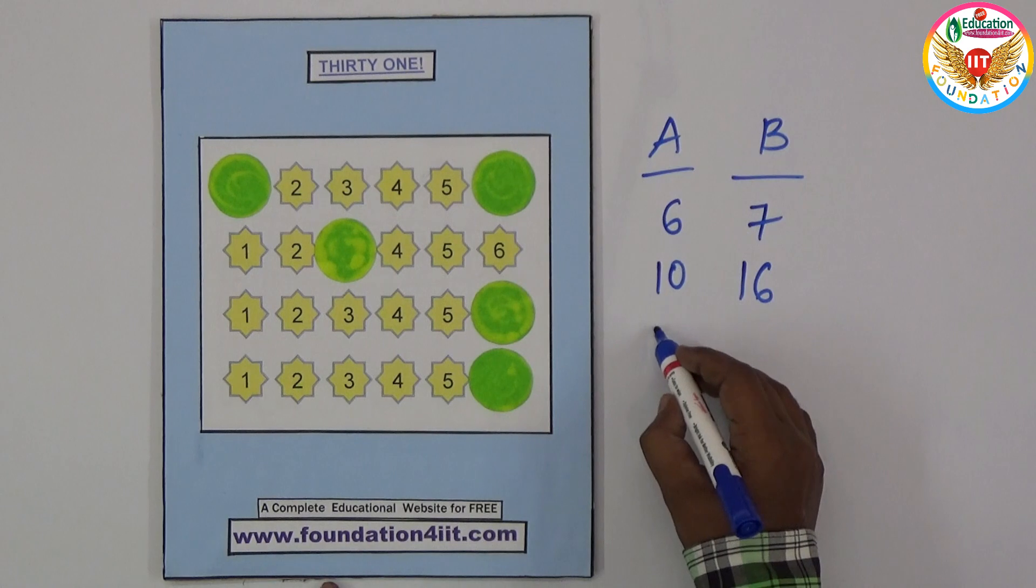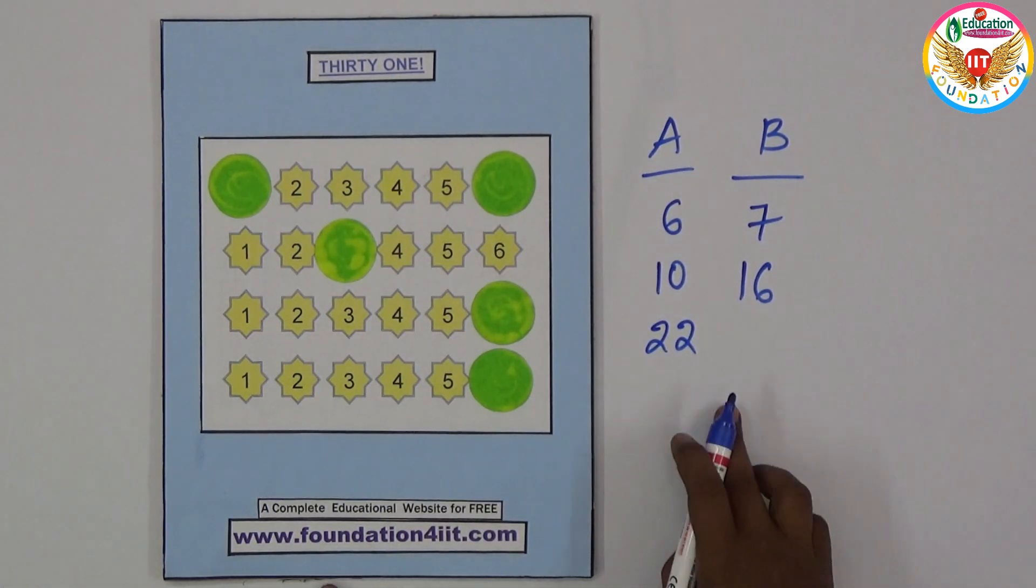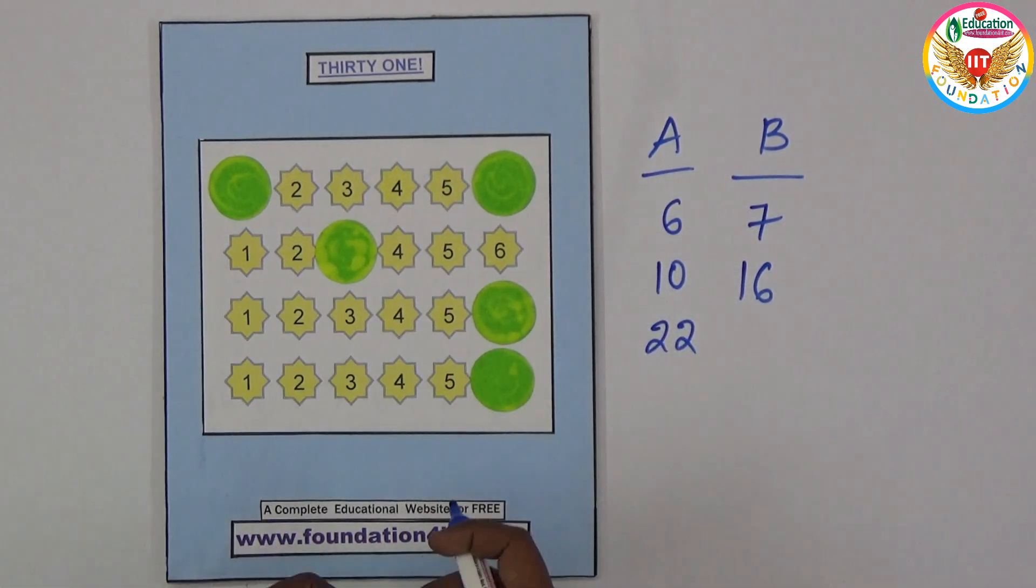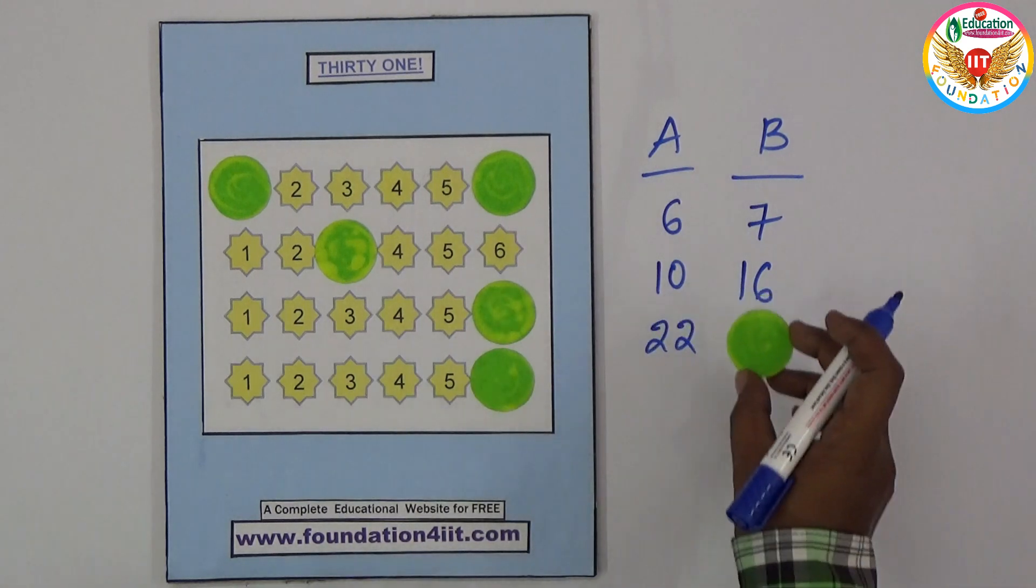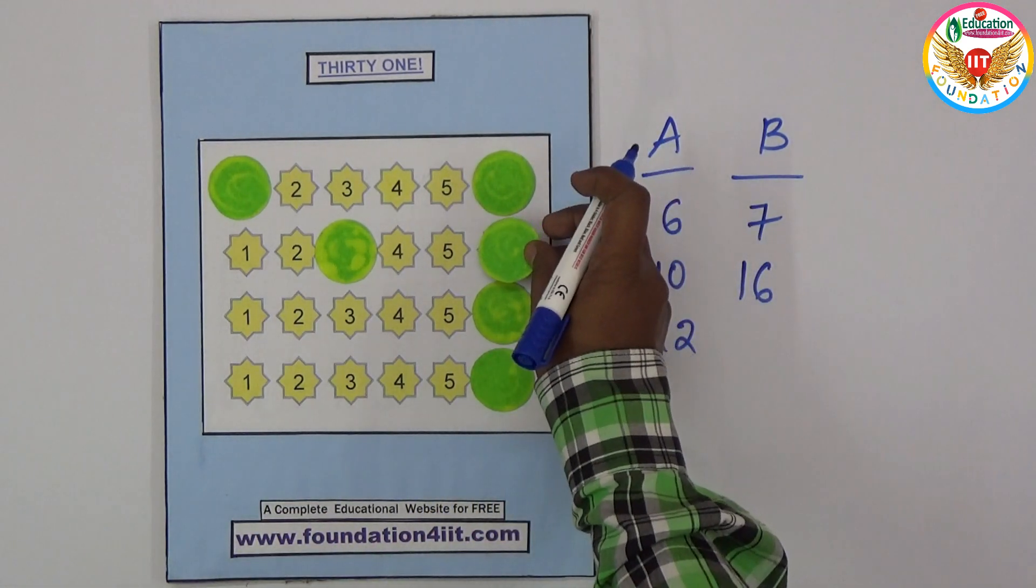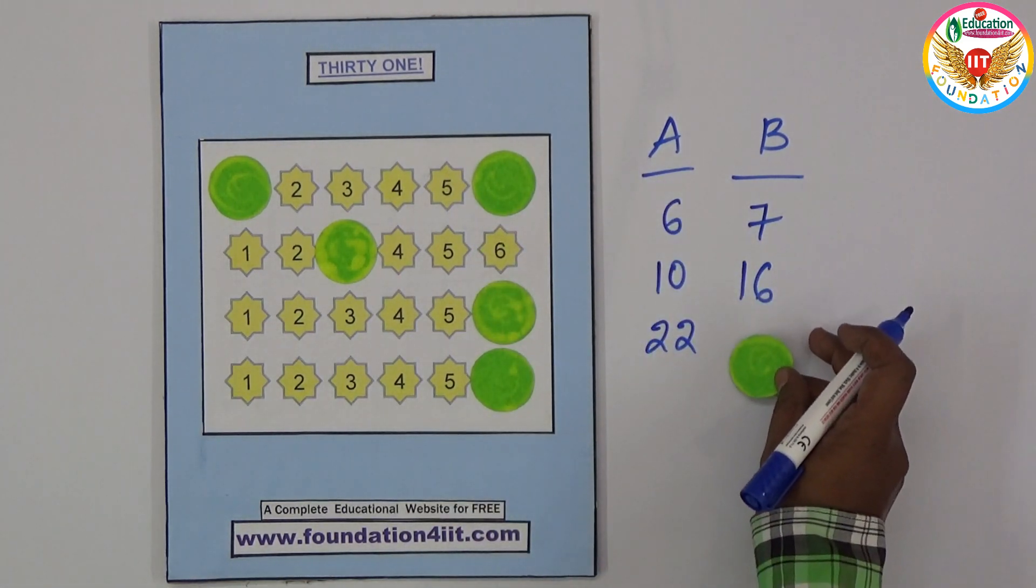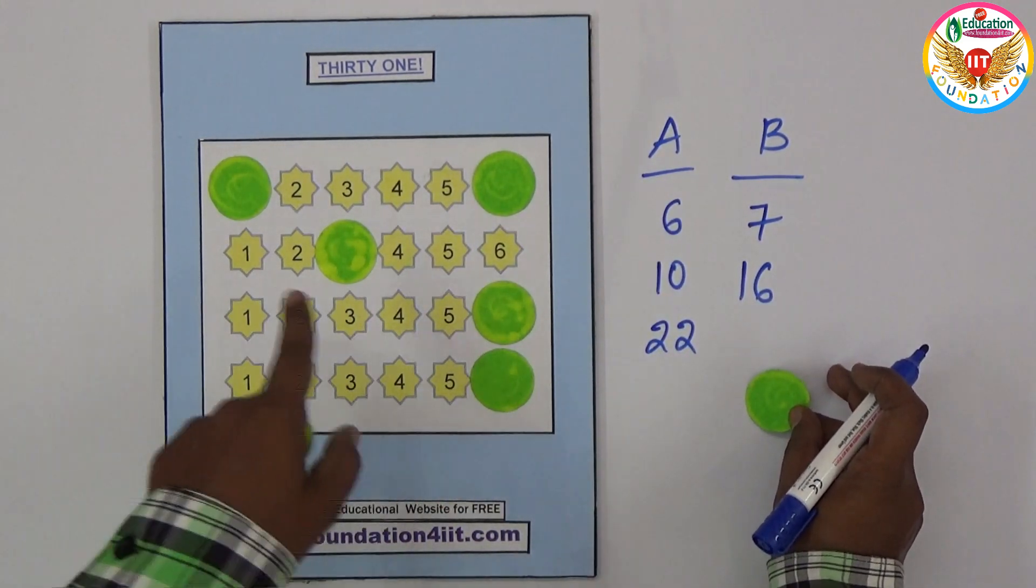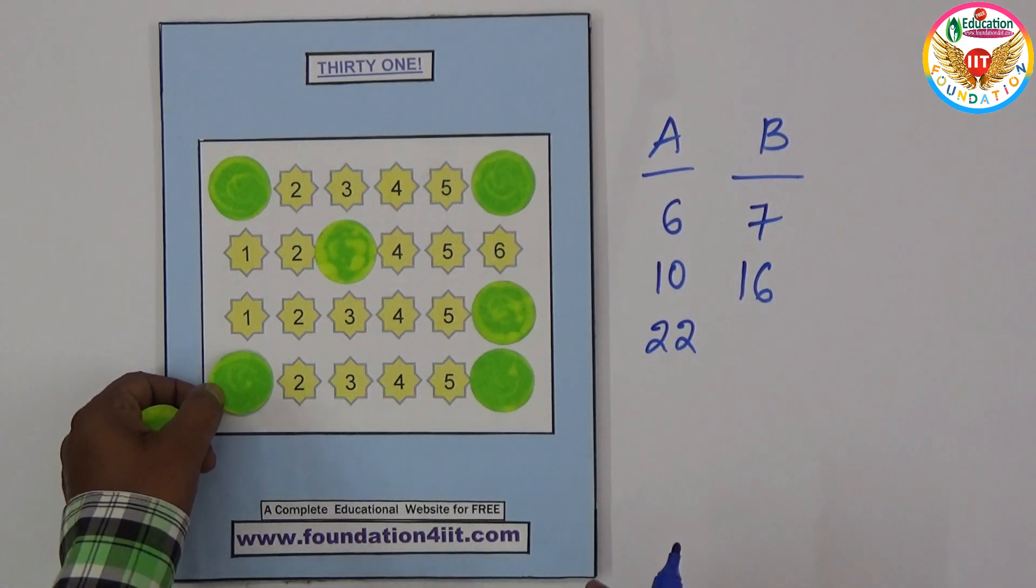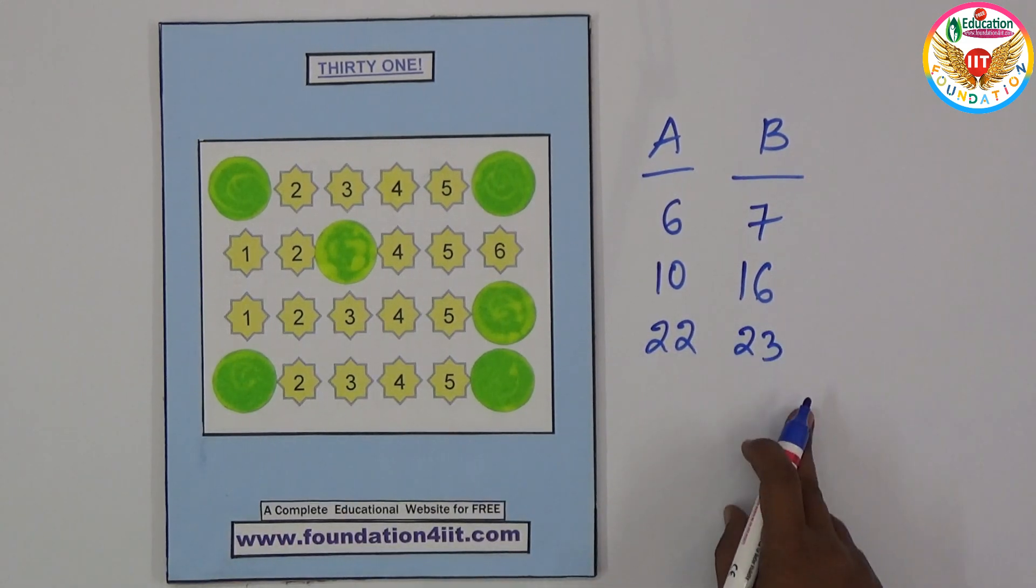Now B should think and keep. The logic behind this - for example, B can keep at this place, imagine 22 plus 6 is 28, so more 3, A can keep anywhere. That's why, by thinking, B kept 1. Now 22 plus 1 is 23 for B.